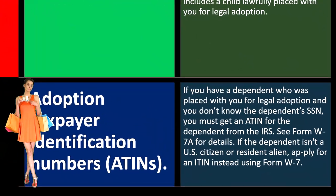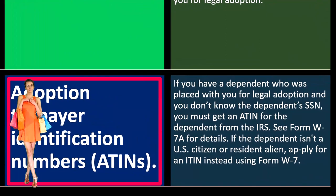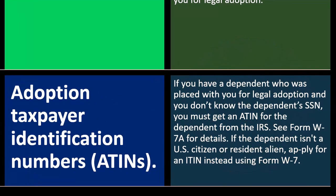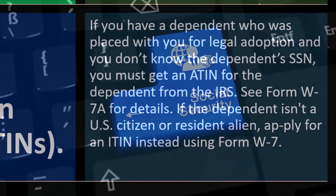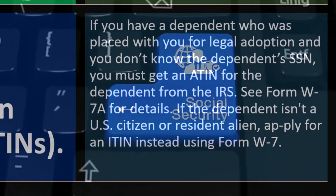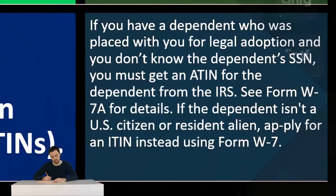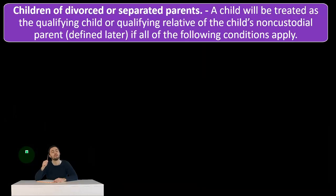Adoption Taxpayer Identification Number — that's an ATIN. If you have a dependent who was placed with you for legal adoption and you don't know the dependent's SSN (social security number), you must get an ATIN for the dependent from the IRS. You can see Form W-7A for details. If the dependent isn't a U.S. citizen or resident alien, apply for an ITIN instead of using Form W-7.